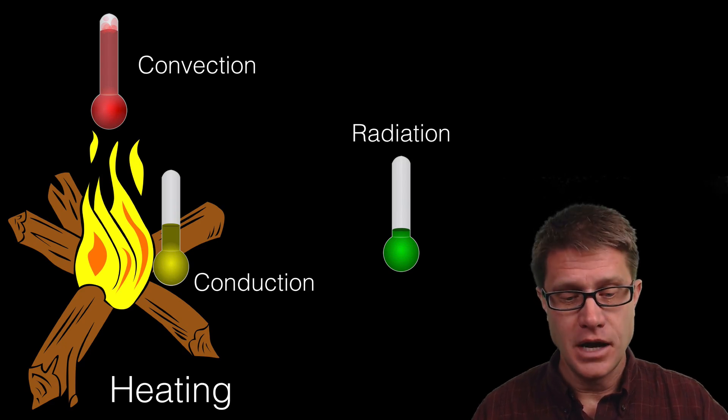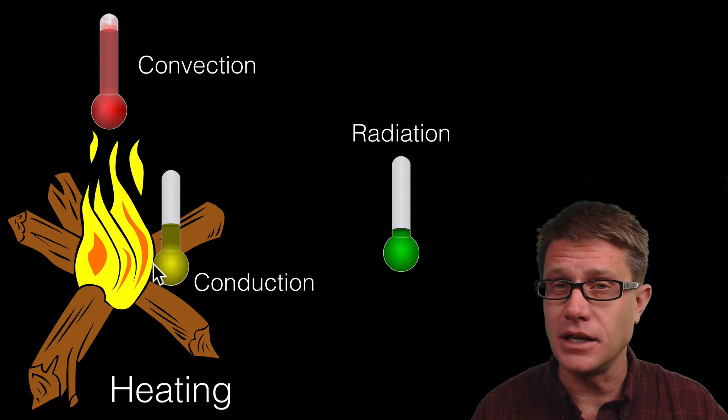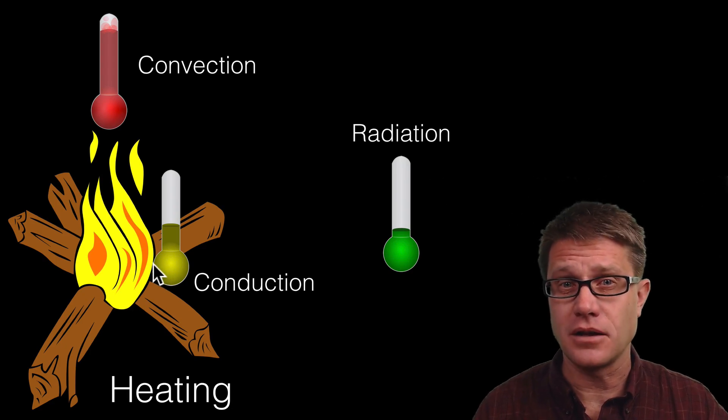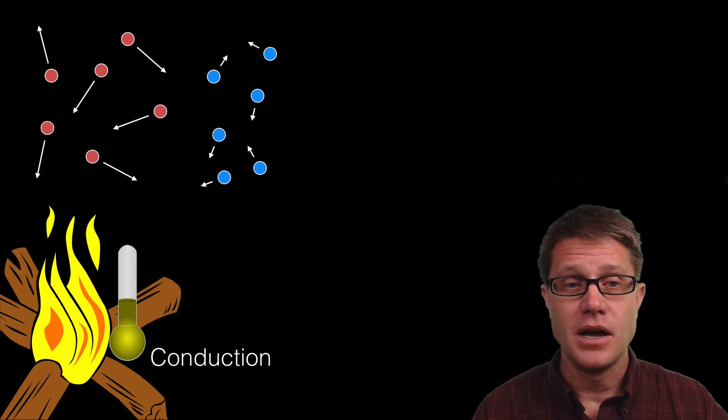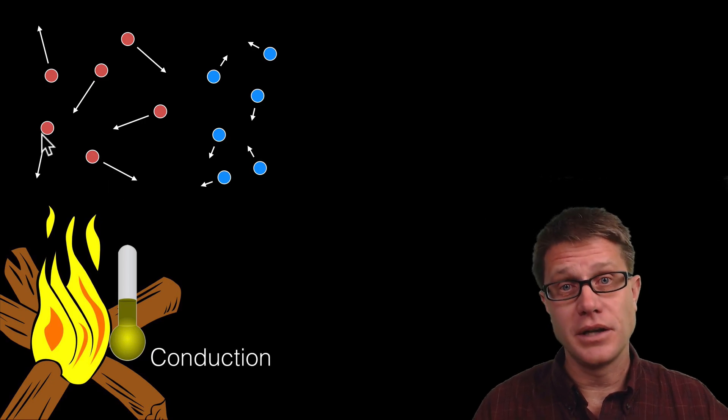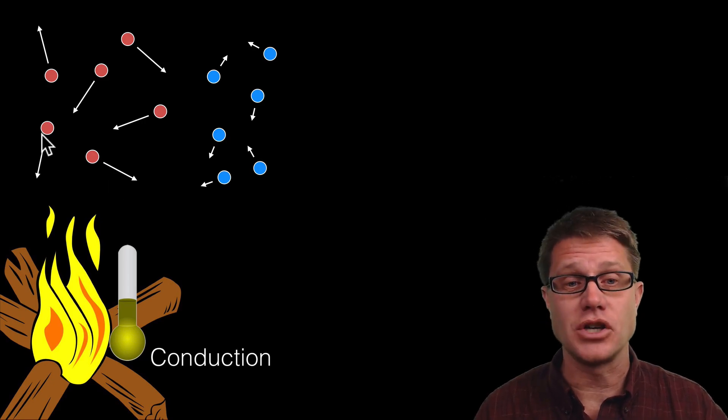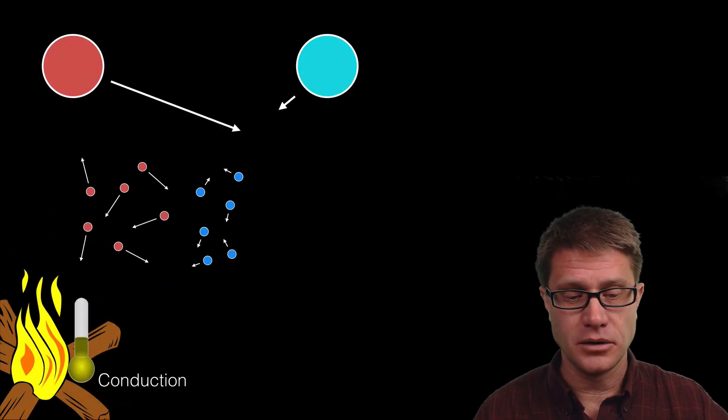Now AP physics folks want you to know what is going on right here at this interface between the fire and the thermometer. And so to understand that you have to look at the molecules themselves. The fire molecules are going faster than those in the thermometer, and so they have a higher amount of kinetic energy. And they are literally colliding with that low energy molecules inside the thermometer.